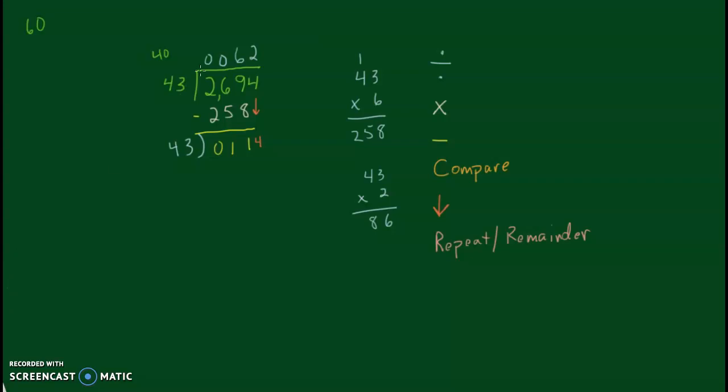Then I multiply. 2 times 43 is 86. Now it's time to subtract. From the top down, I can't do 4 subtract 6. I can't do 1 subtract 8. So I'm going to borrow from the 1. 14 subtract 6 is 8. 10 subtract 8 is 2. 28 is less than 43. There's nothing more to bring down. So it's time for my remainder. My correct answer is 62 remainder 28. And that's close to my original estimate of 60.